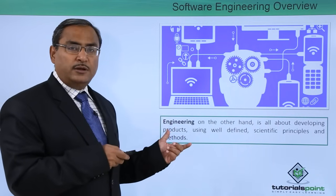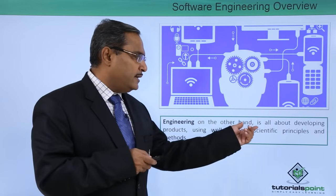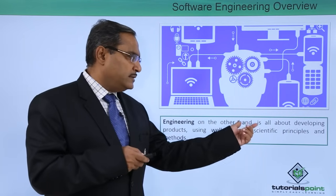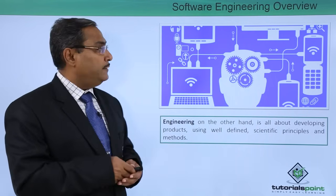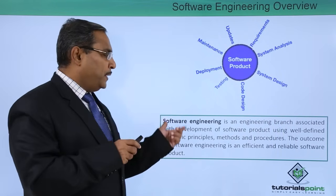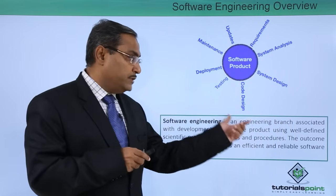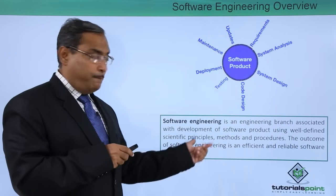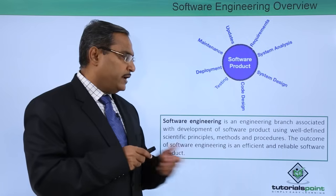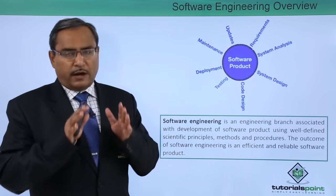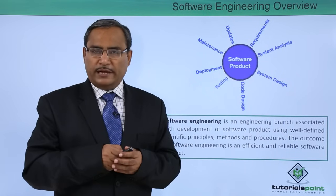Now let us discuss engineering. Engineering is all about developing products using well-defined scientific principles, methods and procedures. So, software engineering is an engineering branch associated with the development of software products using well-defined scientific principles, methods and procedures. The outcome of software engineering is an efficient and reliable software product. In this way, we have defined software engineering and given an overview of the topic.